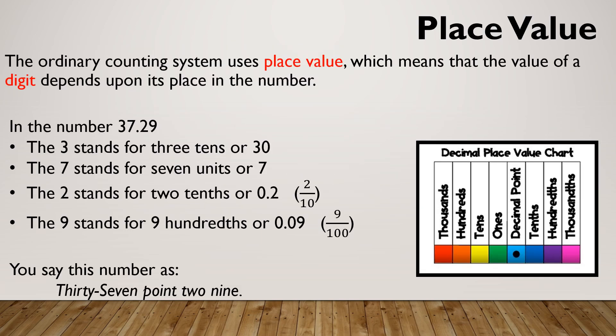So let's talk about place value. I've got a video on place value of whole numbers if anybody wants to check that out. We use the place value system. In the number 37.29, we've got three tens, seven units. Then once we get to the decimal point, we've got two tenths and nine hundredths.